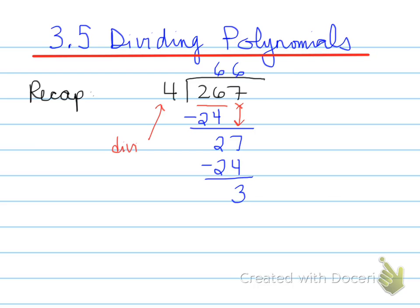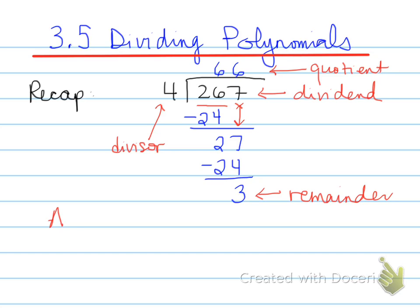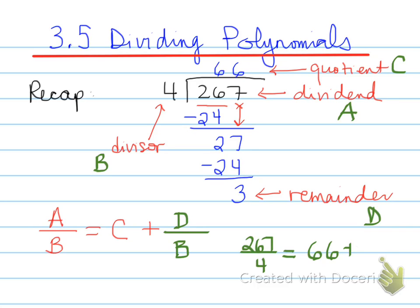The 4 is known as the divisor. The 267 is known as the dividend. The 3 is known as the remainder. The number at the very top is known as the quotient. We can create a division statement: the dividend divided by the divisor equals the quotient plus the remainder divided by the divisor. In this case, 267 divided by 4 equals 66 and 3 quarters.